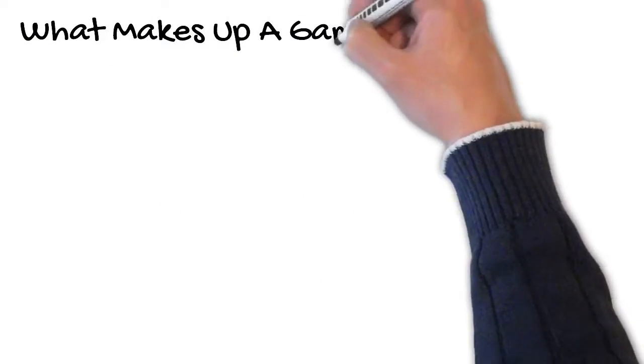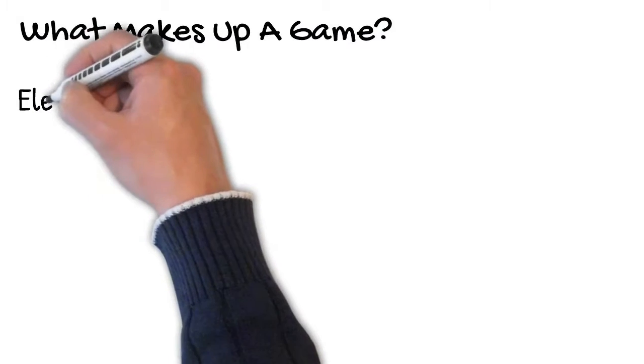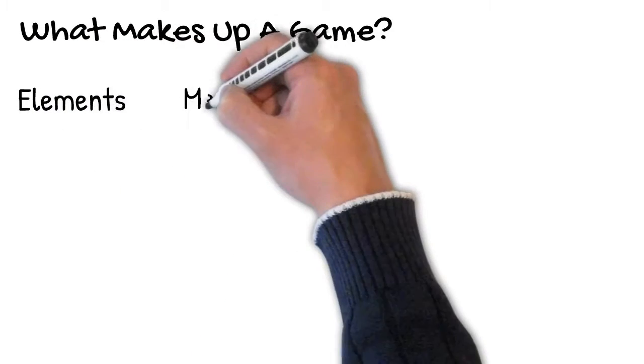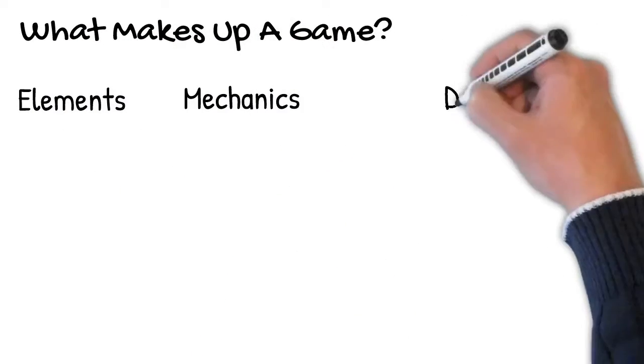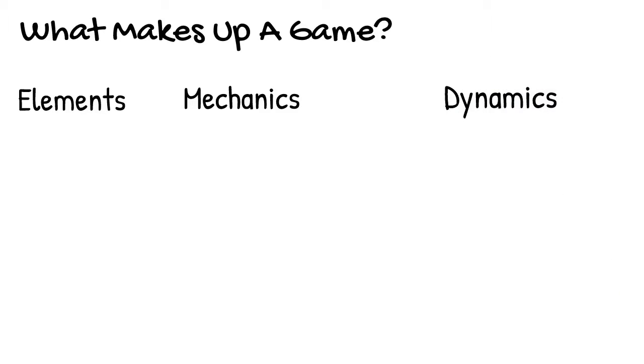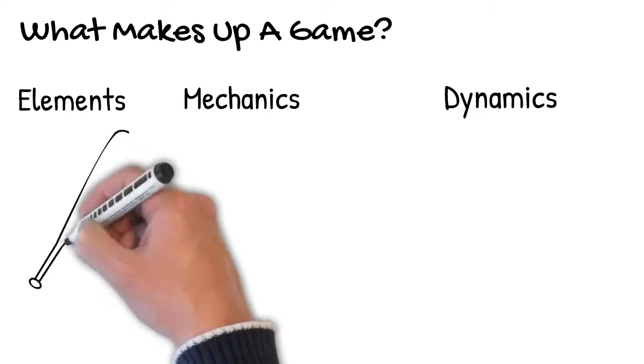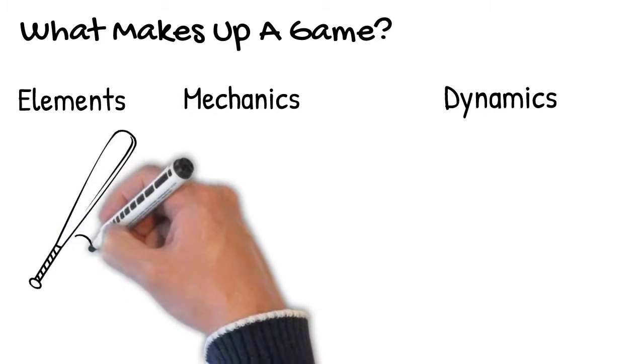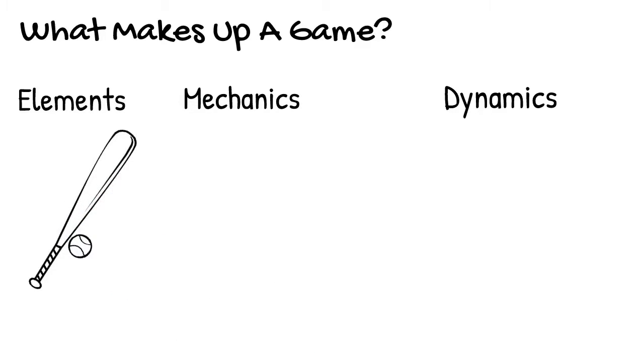Let's look at what makes up a game. We have elements, we have mechanics, and we have dynamics. Under elements, we have basically the instruments we use to play the game, like a bat and a ball.